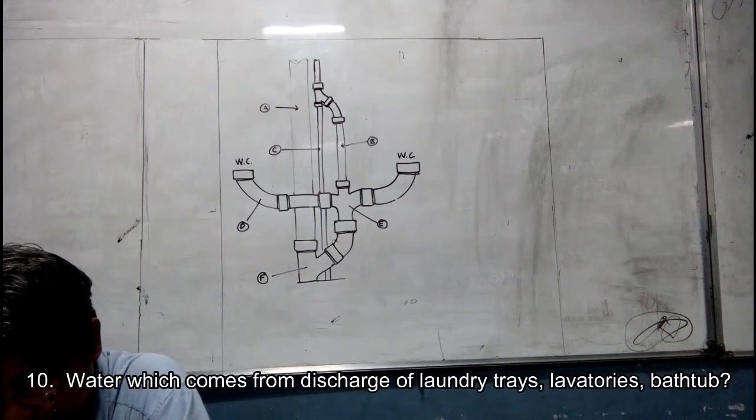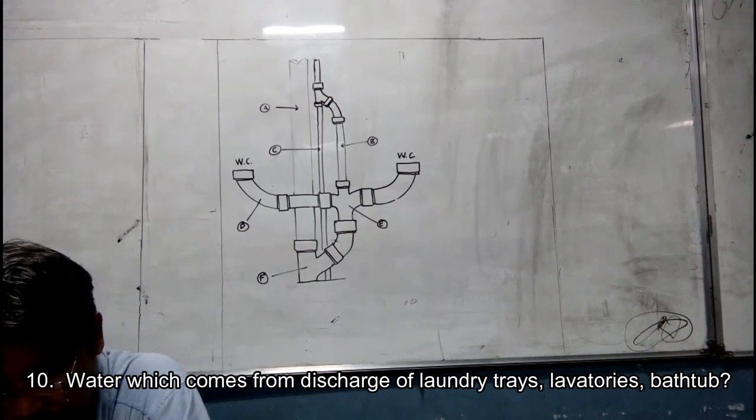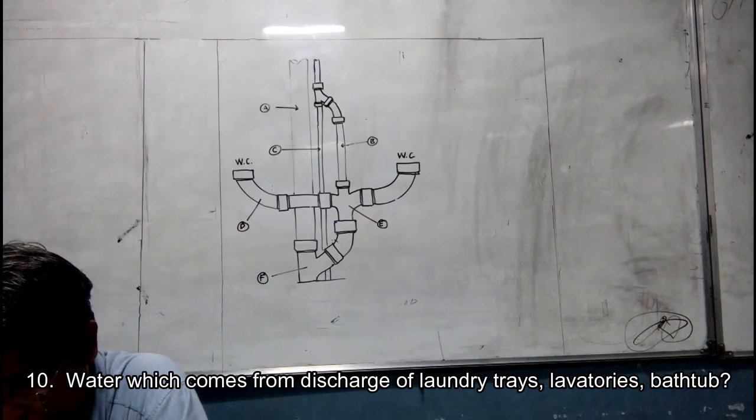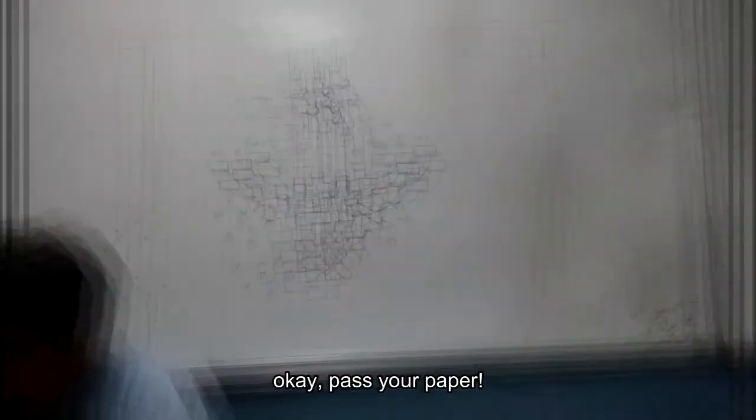Number ten. Water which comes from discharges of laundry trays, lavatory, bathtub. A. black water, B. gray water, C. contaminated water, D. hard water. Okay, pass in paper.